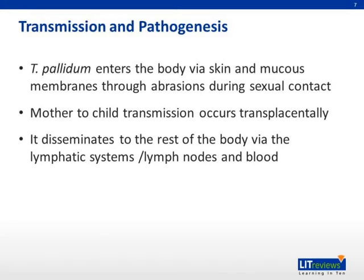Treponema pallidum enters the body via skin and mucous membranes through abrasions during sexual contact, or via the placenta from mother to fetus during pregnancy. It then disseminates via the lymphatic system to regional lymph nodes, and then throughout the body via the bloodstream. Invasion of the central nervous system can occur during any stage of syphilis.